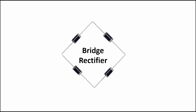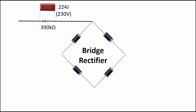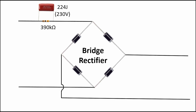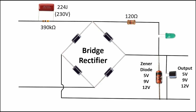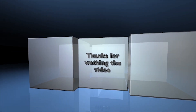4 Diode Bridge Rectifier. Components used: Resistor 390K Ohm, Capacitor 224J 230 Volt, Zener Diode 5 Volt and 12 Volt, Capacitor 470µF 25 Volt, Resistor 120 Ohm, LED connection, AC Line 230 Volt input. Thanks for watching the video.